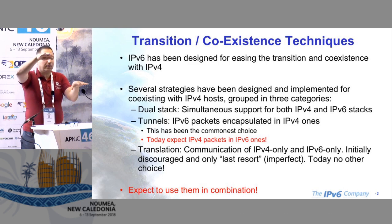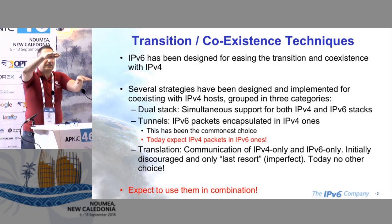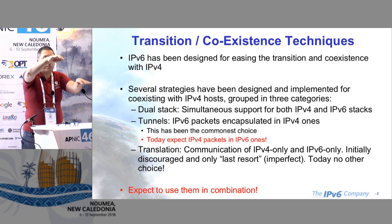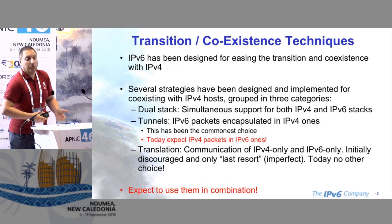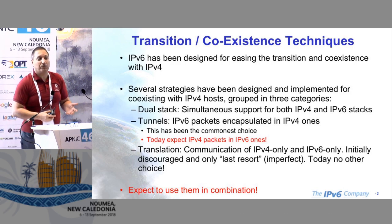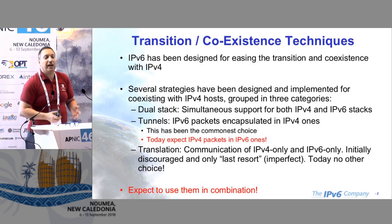We have a balance where today most of the weight of internet traffic is IPv4. The goal is that as more and more services and clients have IPv6 capabilities, the traffic balance will change. Right now we have almost close to 30% of internet traffic being IPv6.